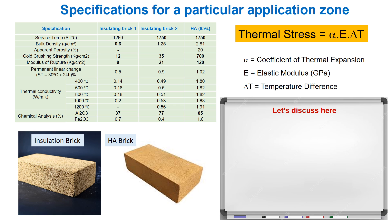Let us start our discussion with the properties of different qualities of insulation bricks and the high alumina dense brick. As we know, thermal stress is the product of the coefficient of thermal expansion, elastic modulus, and temperature difference. Thus, elastic modulus and the alpha value are critical to select the refractory for a particular zone of interest.